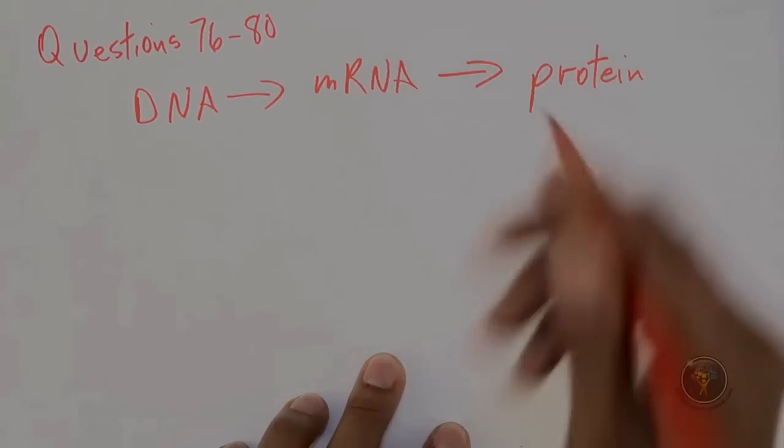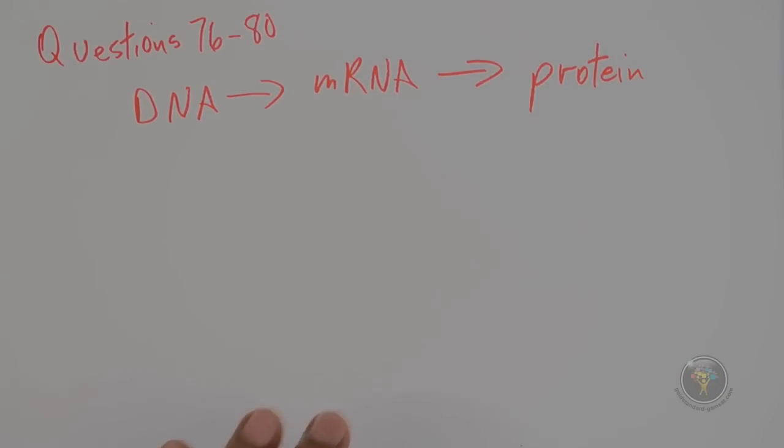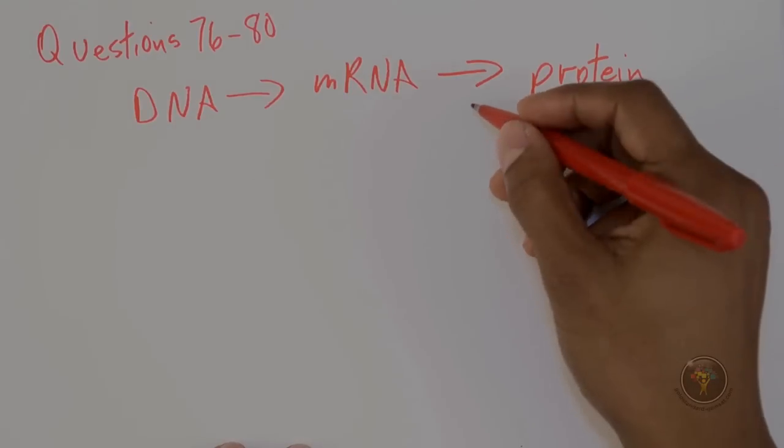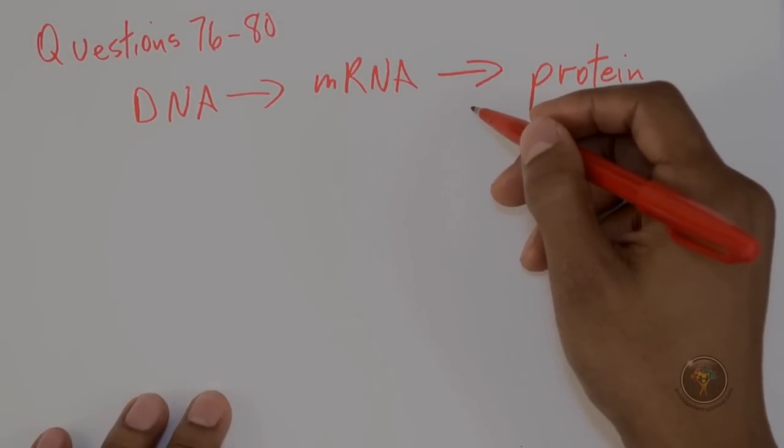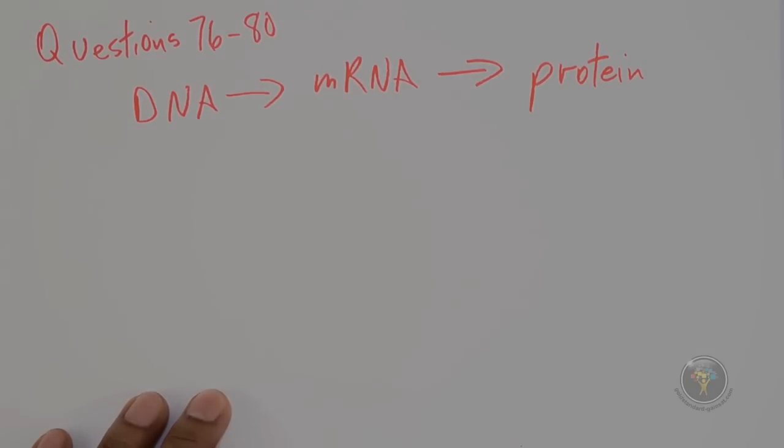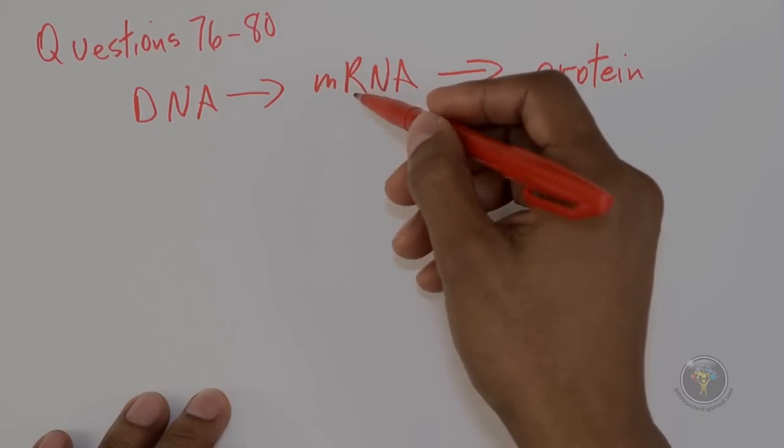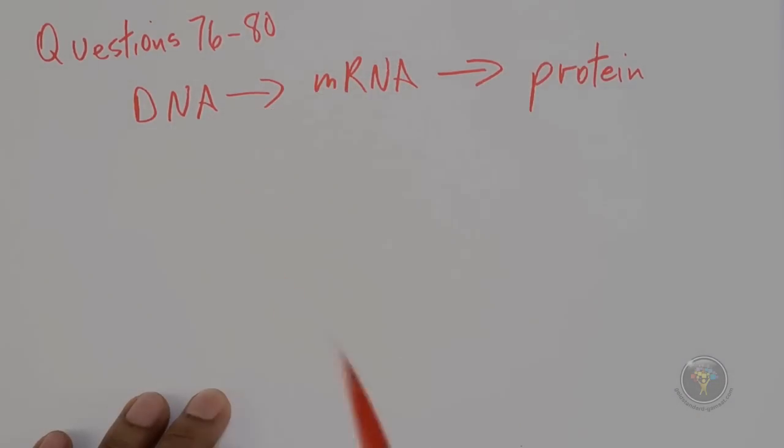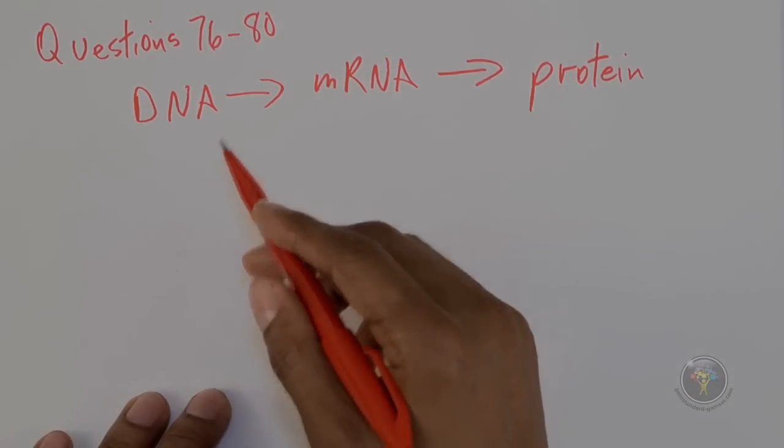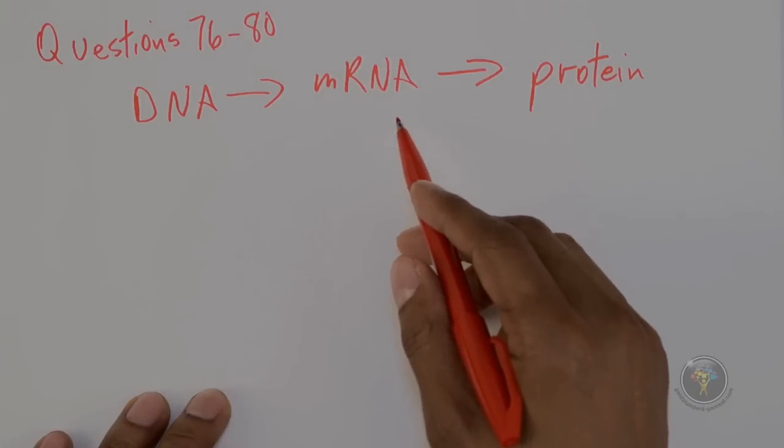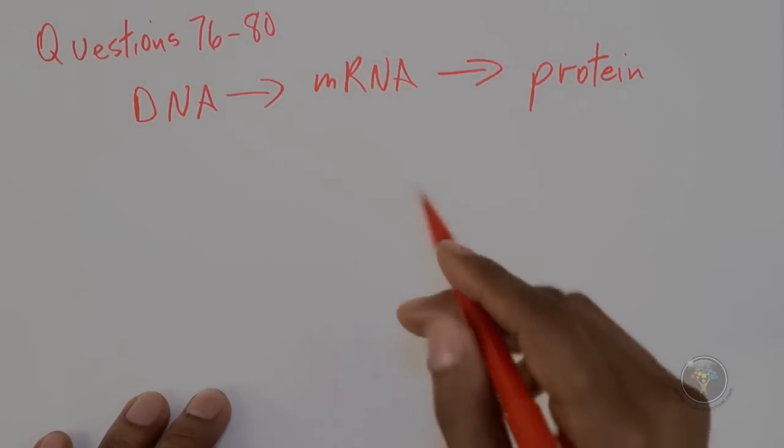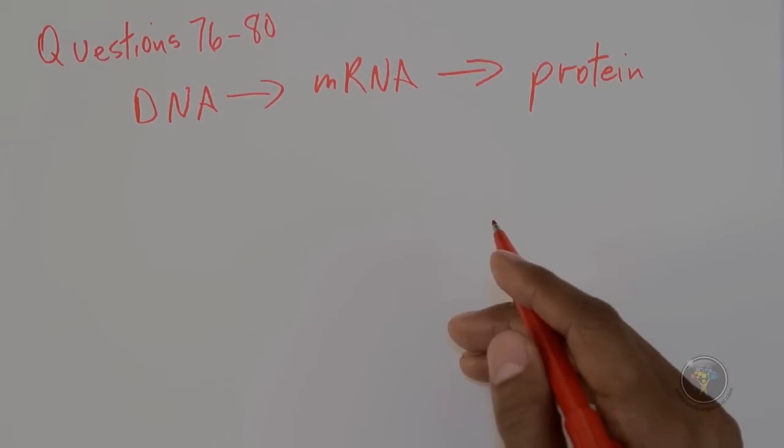And the ribosomes could be, as I said, free or dotted on the rough endoplasmic reticulum. But it's the ribosomes that provide the environment for protein synthesis. And in terms of the messenger, you know, the messenger is a messenger and not DNA. It's not the same as DNA. It is DNA's message that leaves the nucleus and then goes to the rough endoplasmic reticulum, and that message is translated into a protein.